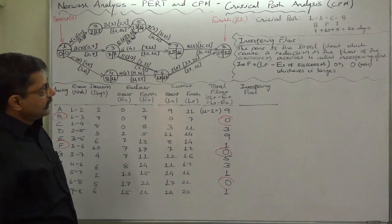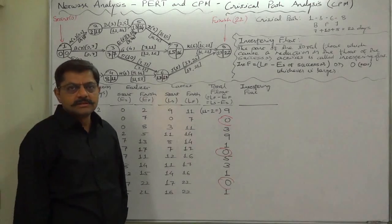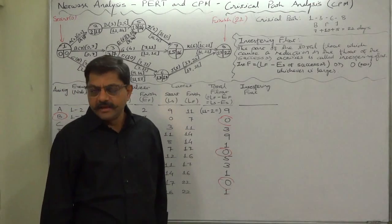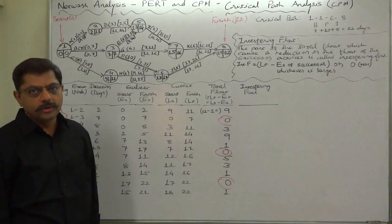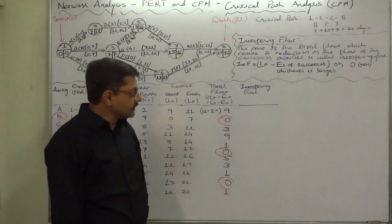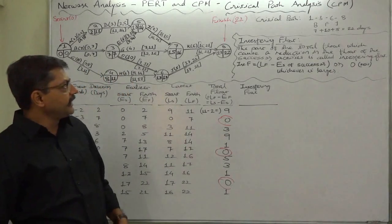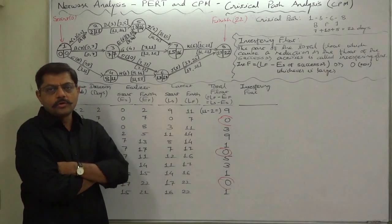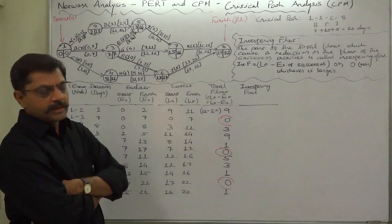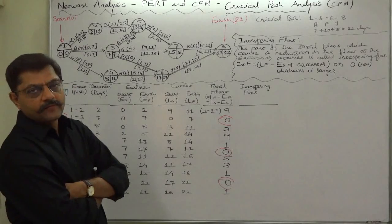In the last lecture, we discussed about the float slacks, free time, and particularly about the total float. As we had discussed, we can classify the total float into three different kinds of float, and one of them is interfering float.